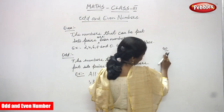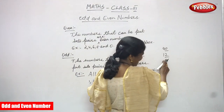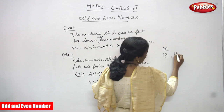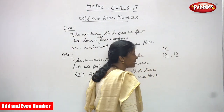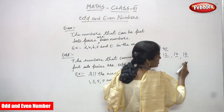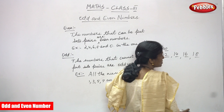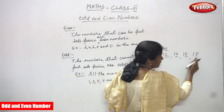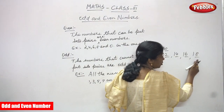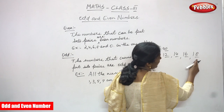For example, 40 — in the ones place you have zero, so it is an even number. For example, 12 — look at the ones digit, the number ends with 2, so it is an even number. Next, 14 — the number ends with 4, so it is an even number. Next, 16 — the number ends with 6, so it is an even number. Next, 18 — look at the ones digit, it is 8, so it is an even number.